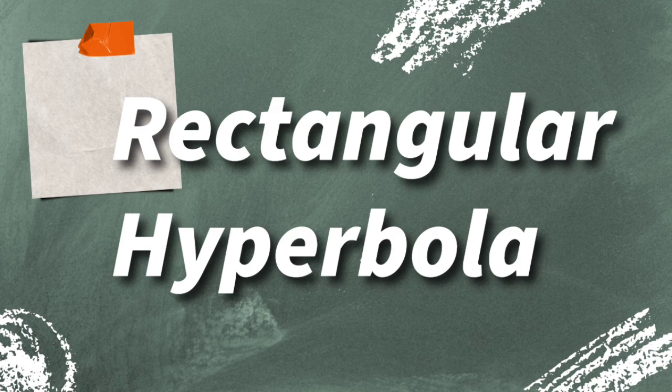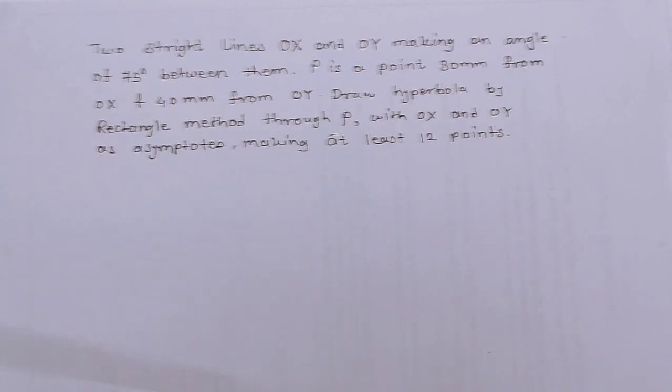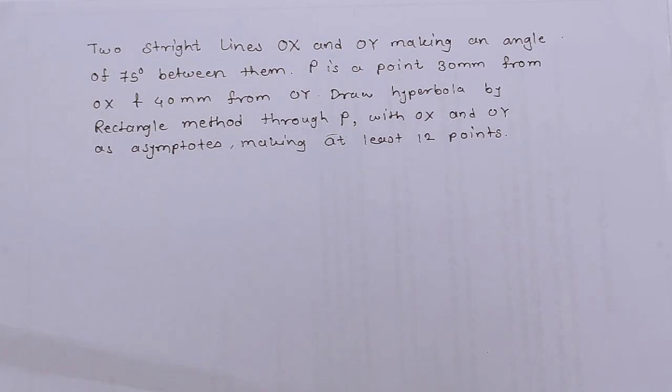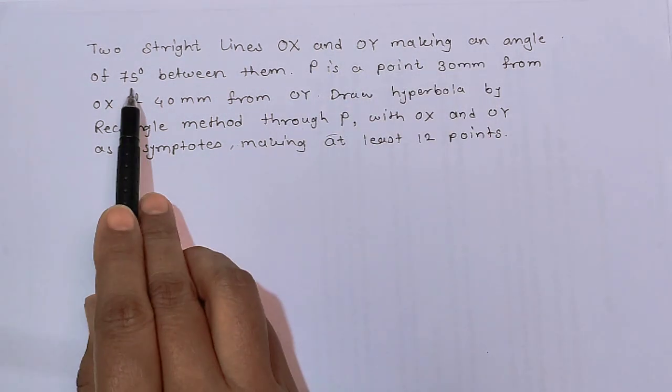So the question may ask in exam like this: we have to draw the hyperbola by rectangle method, or it is also known as rectangular hyperbola. In this problem, OX and OY are given, so OX and OY, these are the asymptotes.